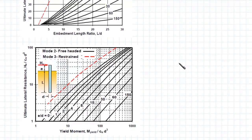Similarly, for the second chart, if you know the yield moment and the ratio E/D, you can determine the value for Hu divided by Cu multiplied by D², and from there you can find the lateral capacity for Mode 2.